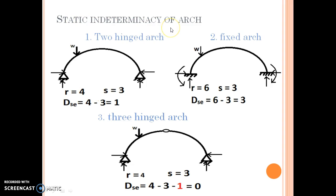Static indeterminacy of arch - first is two-hinged arch. In two-hinged arch, two hinges are provided at the ends and at each hinge, two reactions are developed. So total number of external reactions is 4, total number of equilibrium equations is 3. So external static indeterminacy is 4 minus 3 equals 1. That means two-hinged arch is statically indeterminate of degree 1. It requires an extra compatibility equation to analyze two-hinged arch.